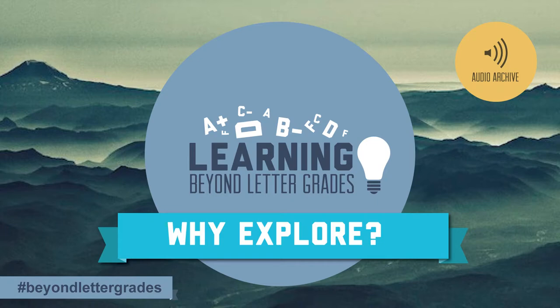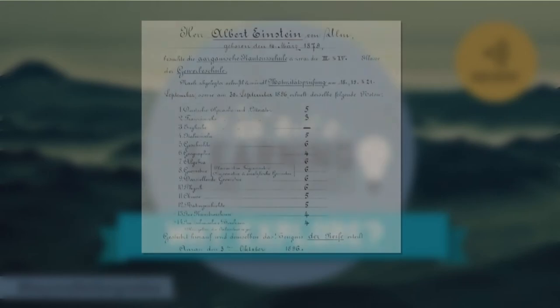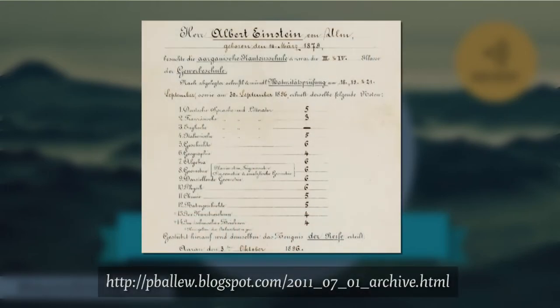Just for fun, here are a couple of report cards from different times. This one from 1872 has categories including Credits Obtainable, Credits Obtained, a percentage score, and your position in class — your class rank. That's not too different from some report cards in certain locations today. Or how about this one? This is supposedly Albert Einstein's report card, and they used a number system to rank instead of letter grades.